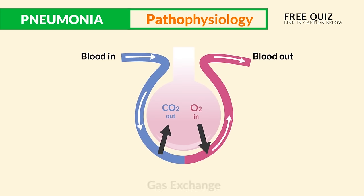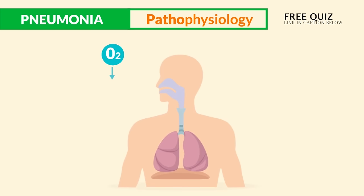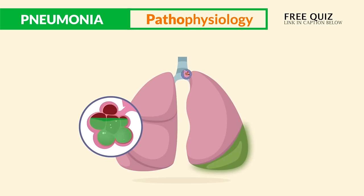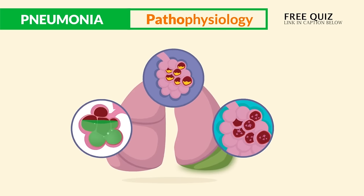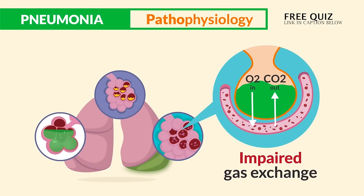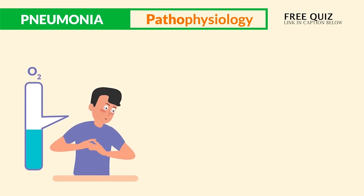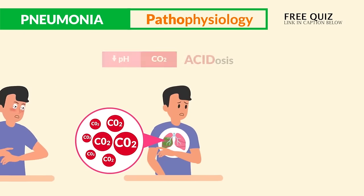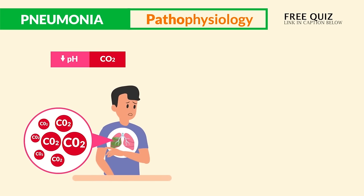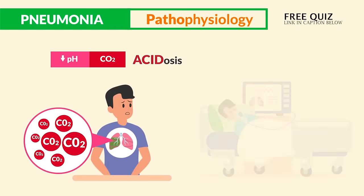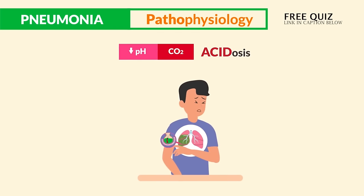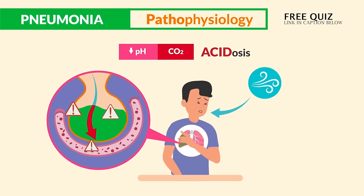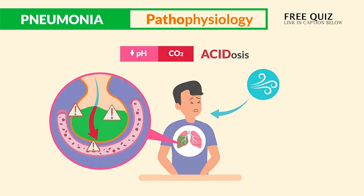The alveoli is where gas exchange occurs — normally we breathe oxygen in and carbon dioxide out. With pneumonia, fluid, mucus, and debris fill the lungs, leading to impaired gas exchange where CO2 can't get out and oxygen can't get in. This results in hypoxia from low oxygen and acidosis from too much CO2 — think 'carbon diacid' — plus impaired ventilation as the body tries desperately to get air through those fluid-filled alveoli.